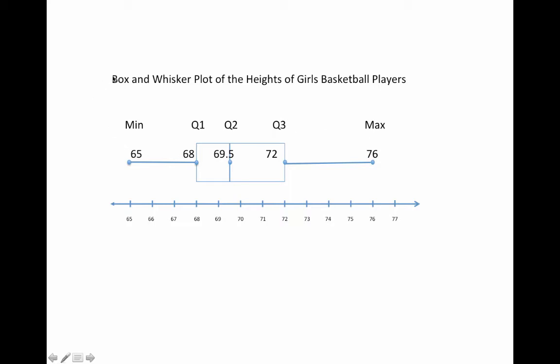You give the plot a heading like 'Box and Whisker Plot of the Heights of Girls' Basketball Players.' Then you draw lines from the minimum to the first quartile and from the third quartile to the maximum.